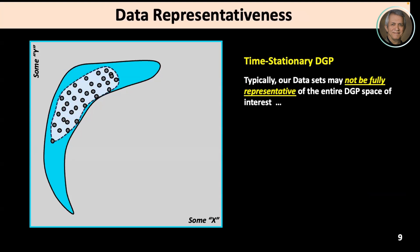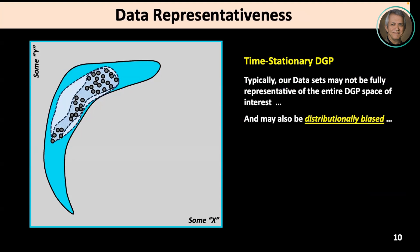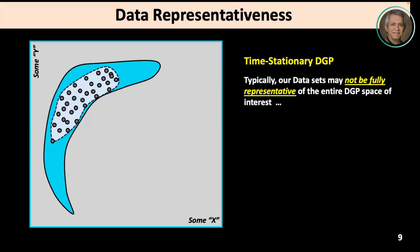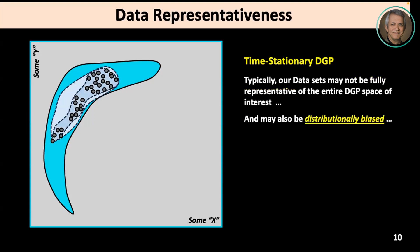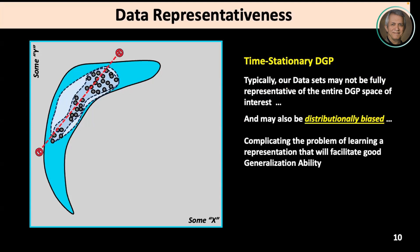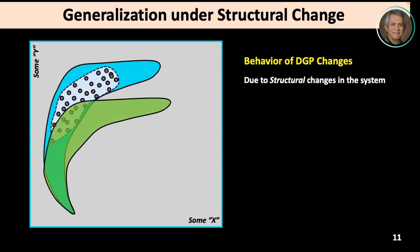Typically our datasets are not going to be fully representative of the data-generating process. Let's assume the data occupies only part of the space, and those data may be distributionally biased. Whereas this part captures the 'banana shape' of the distribution, it's quite possible that over here it doesn't. If I try to extrapolate using information pulled from this subset of catchments, I might not be able to extract the right principles. Then you might have structural changes to the system, meaning the data-generating process has moved.